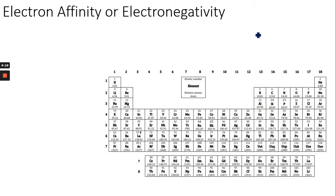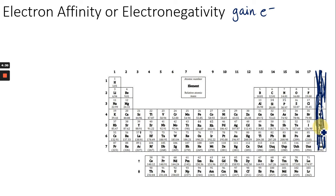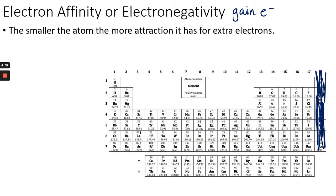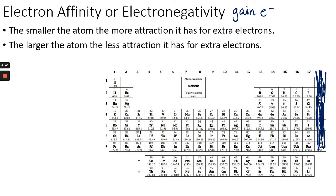Electron affinity is how easily an atom can gain an electron — ionization energy was about losing an electron, electron affinity is about gaining one. For this trend, we ignore the noble gases — group 18 — because they don't gain or lose electrons. The smaller the atom, the easier it is for the nucleus to attract an extra electron. The larger the atom, the less attraction it has for extra electrons.